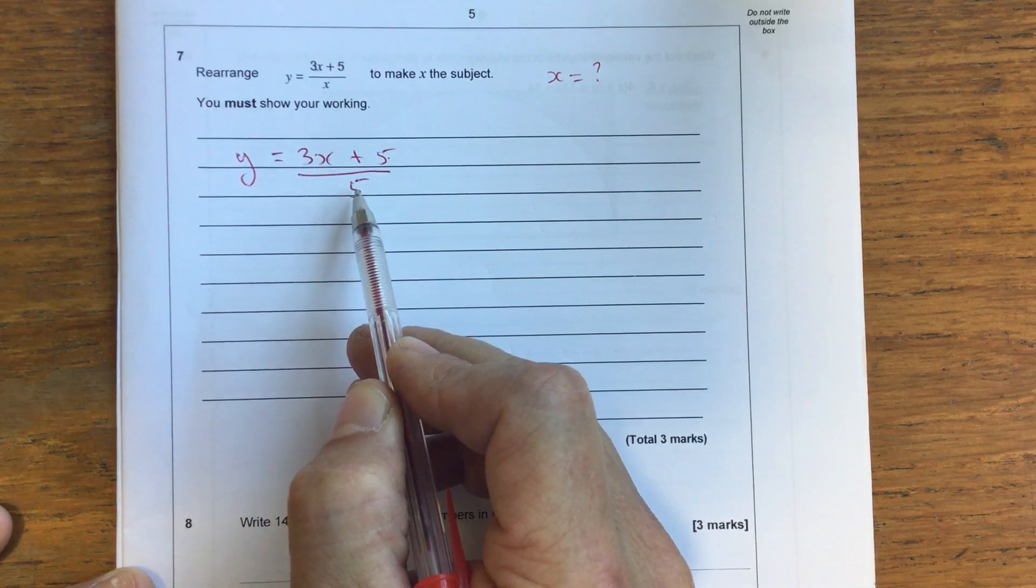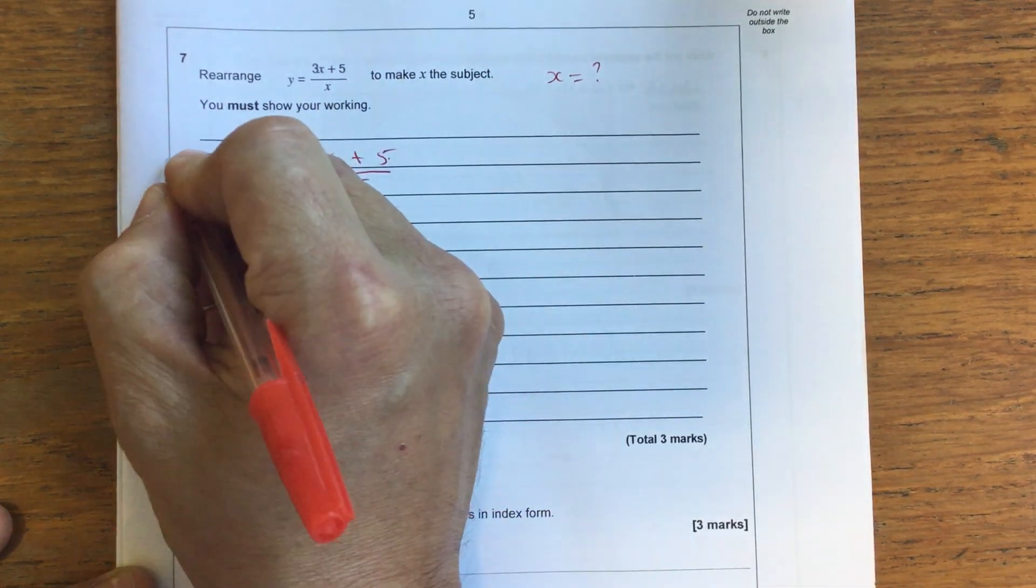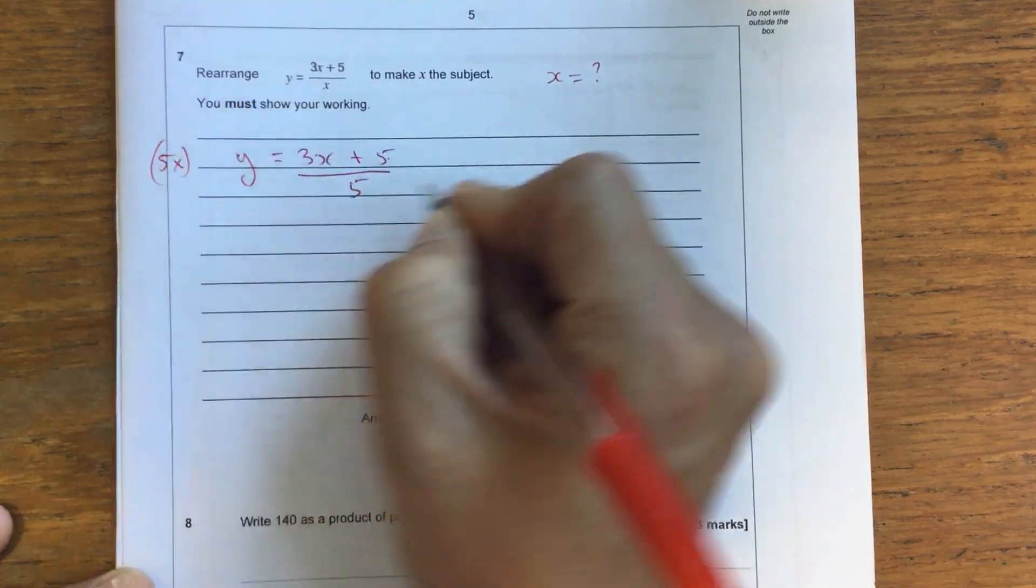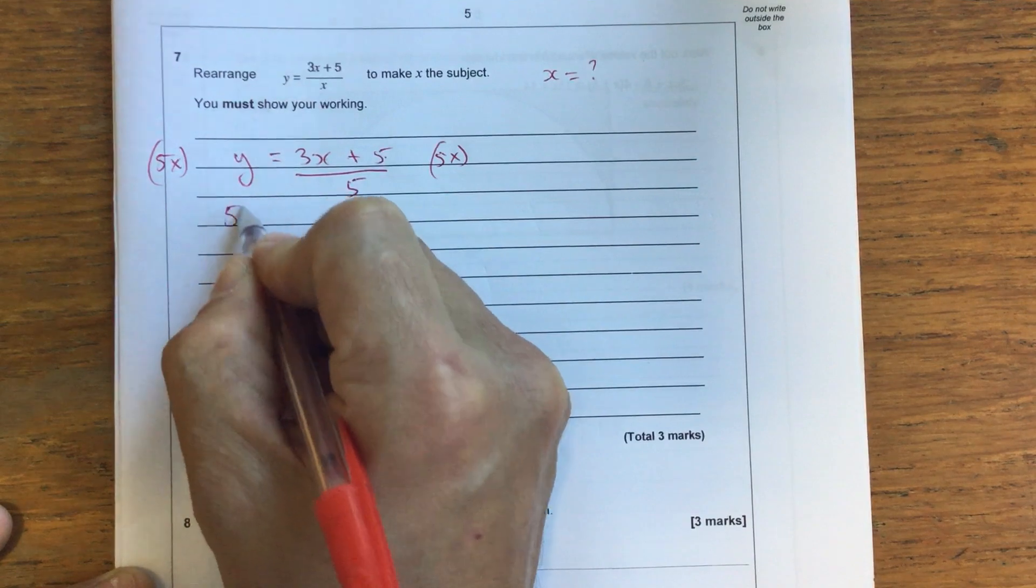And the opposite of divide by 5 is times by 5. So I'm going to multiply both sides by 5. So I'm going to do 5 times on that side and 5 times on that side. So on the left hand side, I'll end up with 5y.